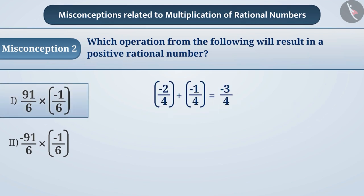The sum of two negative rational numbers is negative. Some children consider this understanding to be true for multiplication as well and believe that the product of two negative rational numbers is also negative.